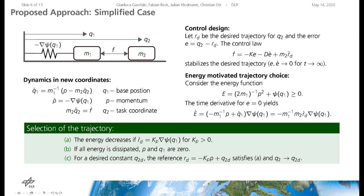The reference is chosen as the sum of the momentum scaled by a positive number and a constant desired position. By this choice the energy decreases. Additionally, the second mass converges towards the desired equilibrium when the first mass stops.